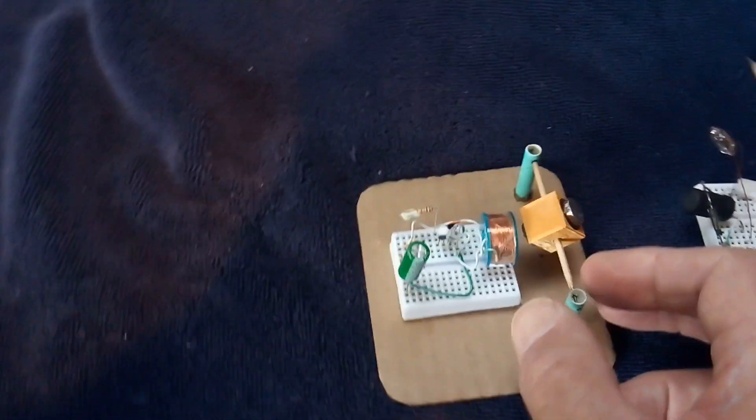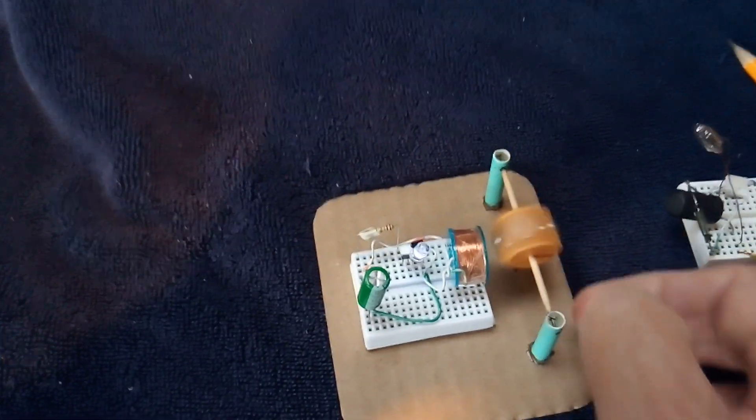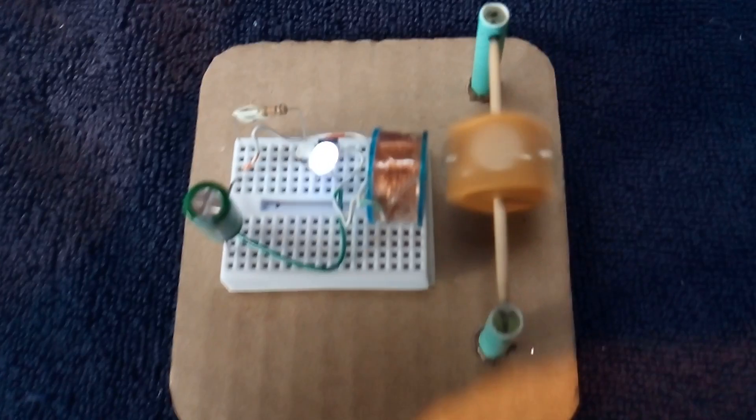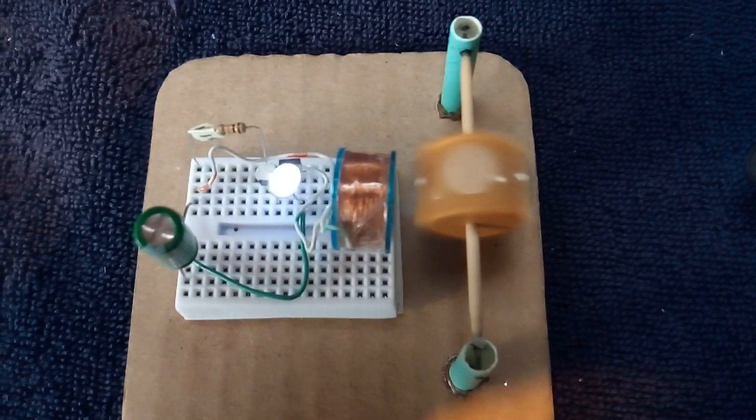Let me show you how this works. As soon as this goes around, it's going to trigger the circuit. Now the circuit's being triggered by that magnet going by that fine wire coil, and that's how that works.